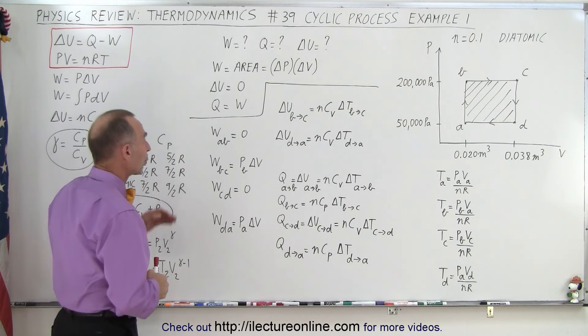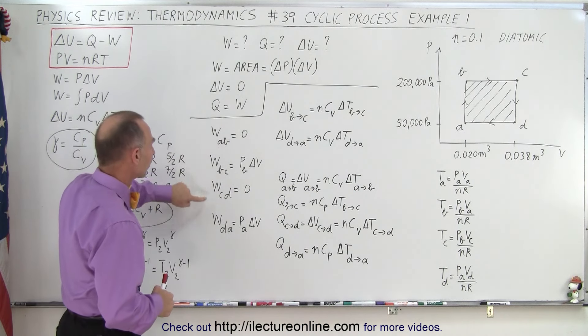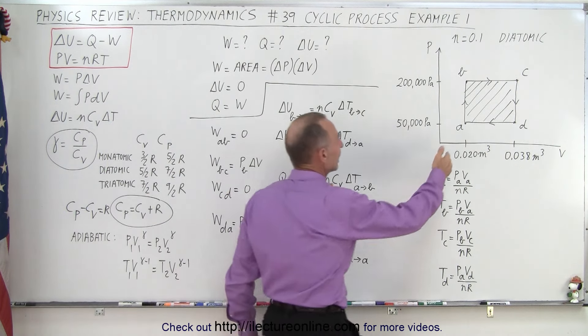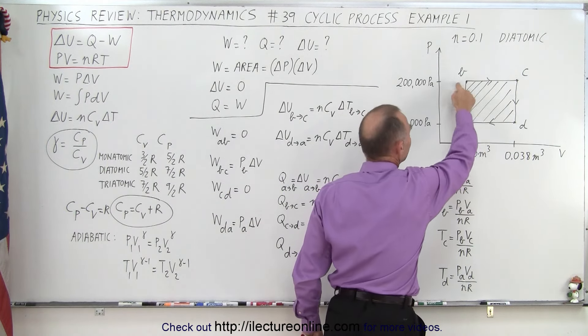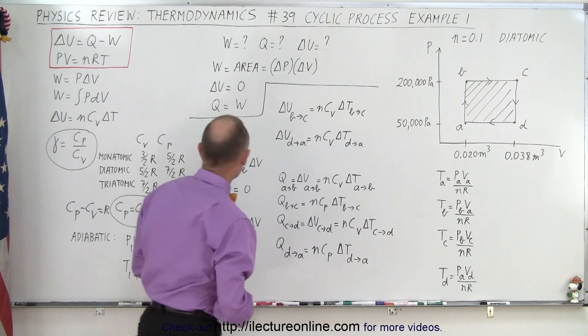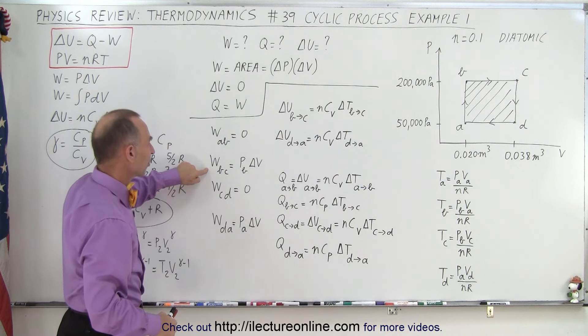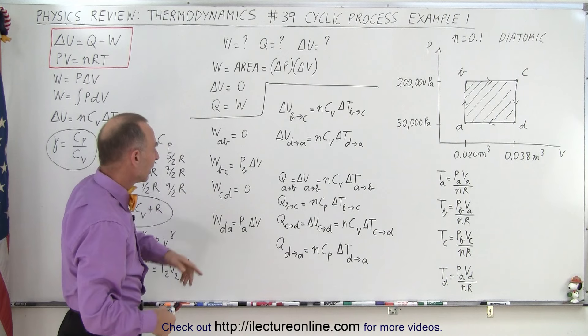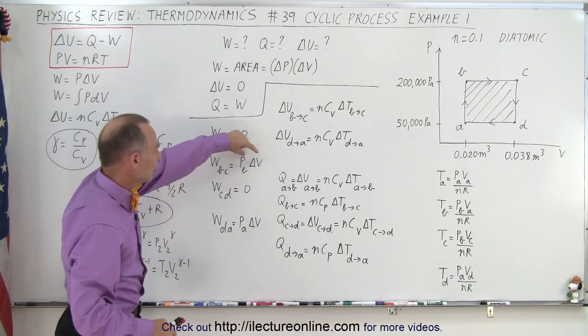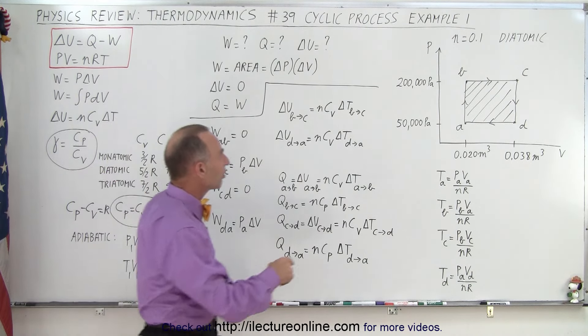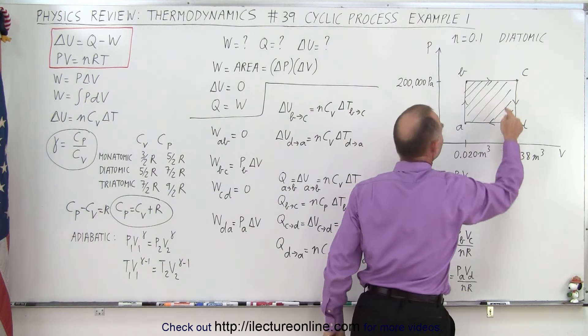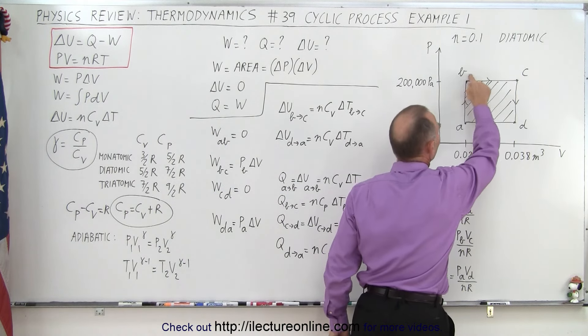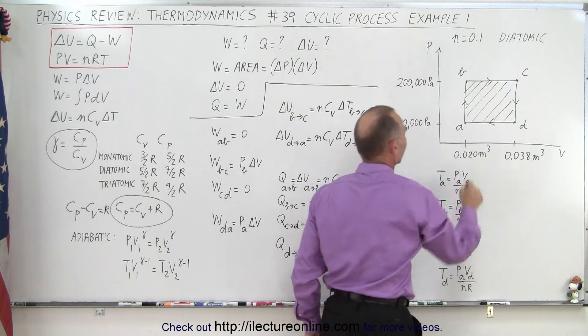Notice there's no work done in the isovolumetric process from A to B and C to D, and there's work done in the process that's isobaric from B to C and from D back to A, and notice that the change in the volume will be positive going from B to C and negative going from D to A, so that's positive work done and negative work done here.